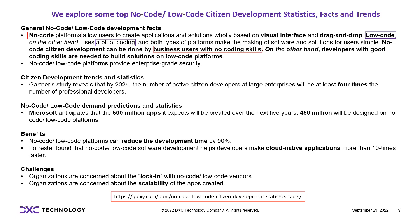Regarding benefits: a no-code or low-code platform can reduce development time by 19 percent. Forrester also found that no-code and low-code platform app developers can make cloud-native apps more than 10 times faster. Regarding challenges: organizations are concerned about working with no-code and low-code vendors, and also concerned about scalability of the apps created.